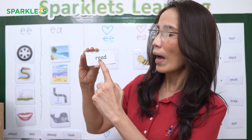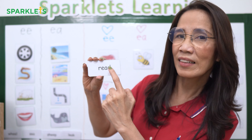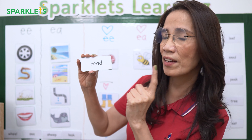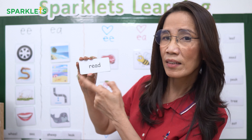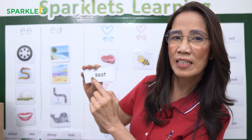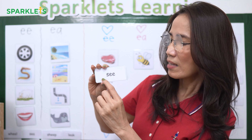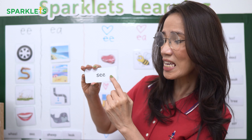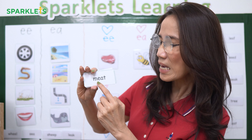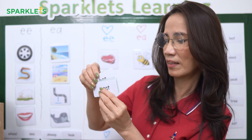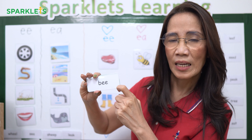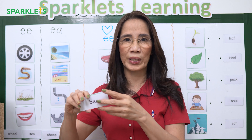Here are the words. R — EAD. Read. That is how to read using onset and rhyme. Do the same thing with the other words.